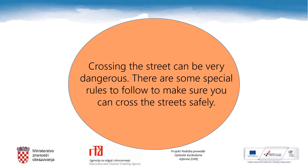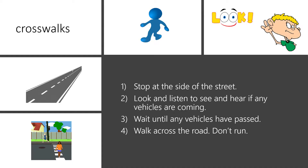Children, I want you to remember something. This is very important. Crossing the street can be very dangerous. That is why there are some special rules to follow to make sure you can cross the streets safely. Please follow these rules. Streets and roads have zebra crossings or crosswalks. Always make sure you can see both ways when crossing. You need to stop at the side of the street, look and listen for any vehicles coming, wait until they have passed, then walk across the road — don't run.